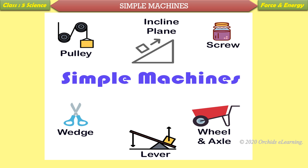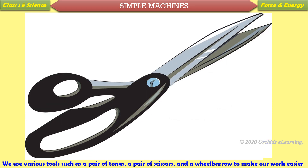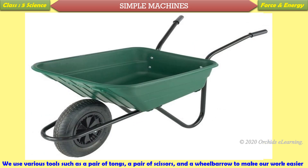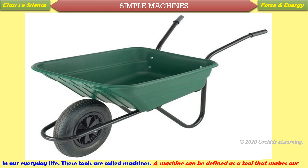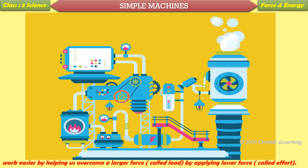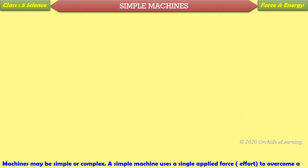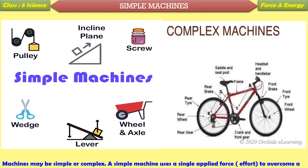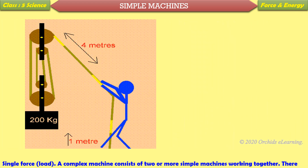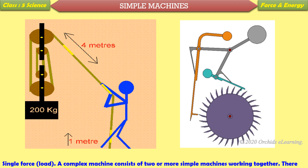Simple machines: We use various tools such as a pair of tongs, a pair of scissors, and a wheelbarrow to make our work easier in everyday life. These tools are called machines. A machine is a tool that makes our work easier by helping us overcome a larger force called load by applying a lesser force called effort. Machines may be simple or complex. A simple machine uses a single applied force (effort) to overcome a single force (load). A complex machine consists of two or more simple machines working together. There are six types of simple machines: lever, wheel and axle, pulley, inclined plane, screw, and wedge.